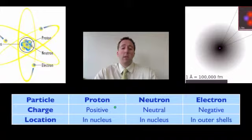So a proton has actually got a positive charge. A proton is positively charged and it's found in the nucleus of an atom. A neutron has no charge, so it's got a neutral charge. It's also found in the nucleus.